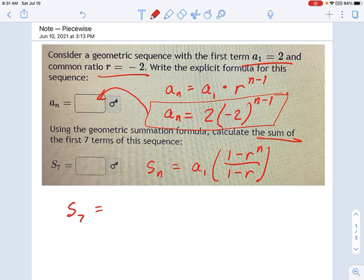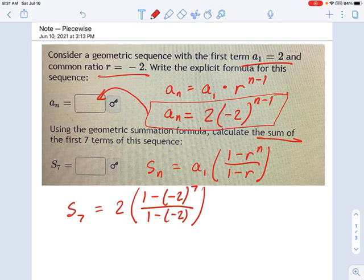So a₁ equals 2, 1 minus r - we found r already, that's negative 2. So this is negative 2 to the seventh power, and on the bottom it's just 1 minus negative 2. Now we have to be careful about these negative signs. Notice that I'm putting them in parentheses. If you're plugging this into a calculator, you need those parentheses around negative signs and fractions,